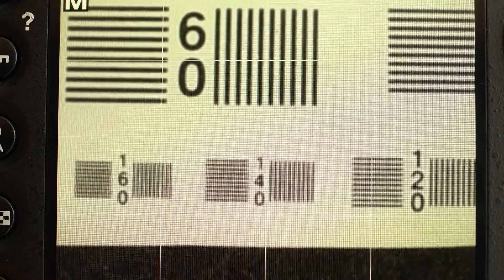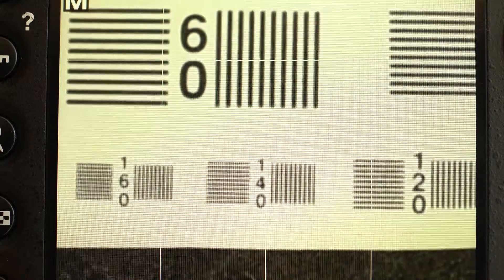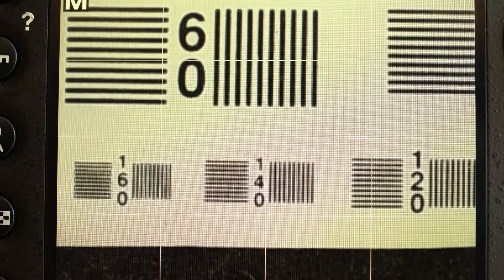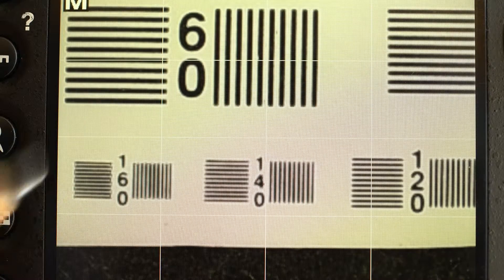At f16 you can see it picks up a little more black on white, f11 a little cleaner, f8, f5.6. You can see the contrast between black and white is much better at f5.6.